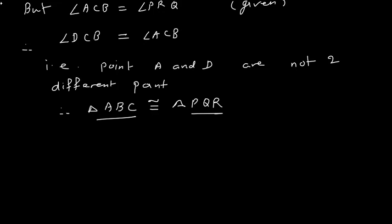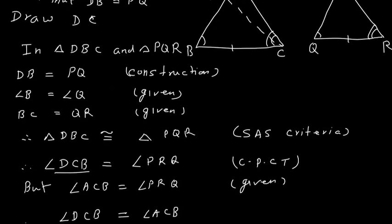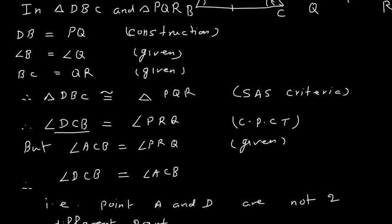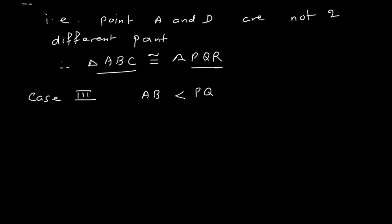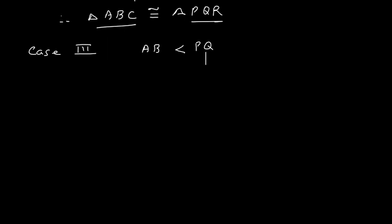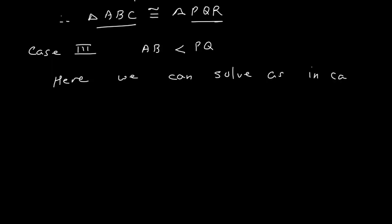Case 3: AB is less than PQ. Here PQ is greater than AB, so I take a point S on side PQ such that SQ equals AB. I then proceed similarly as in Case 2 to prove that triangle ABC is congruent to triangle PQR.